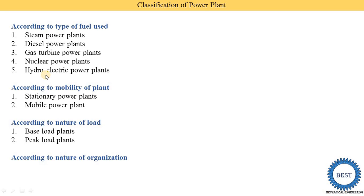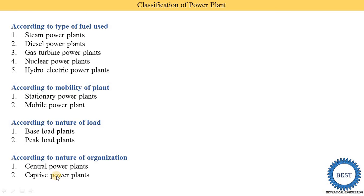The fourth classification is according to the nature of organization. According to the nature of organization, there are two types: central power plant and captive power plant. We will now understand these four terms in detail — base load, peak load, central, and captive.